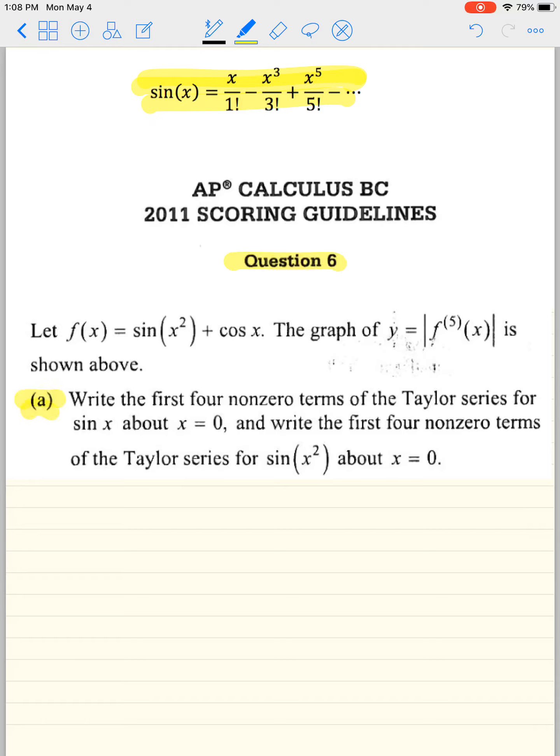So I'm not going to assume that you know it. So what happens here? It says, let f of x equals sine x squared plus cosine x. Great.